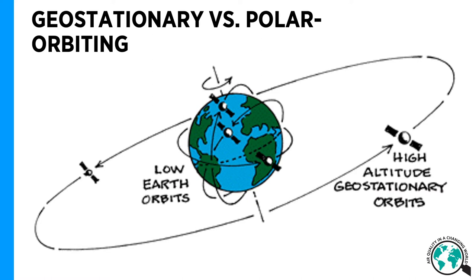The downside, however, is that it has weak coverage at high latitudes. In fact, you can't even see right over the poles with a geostationary satellite. And being at a higher altitude also means lower image resolution and quality.